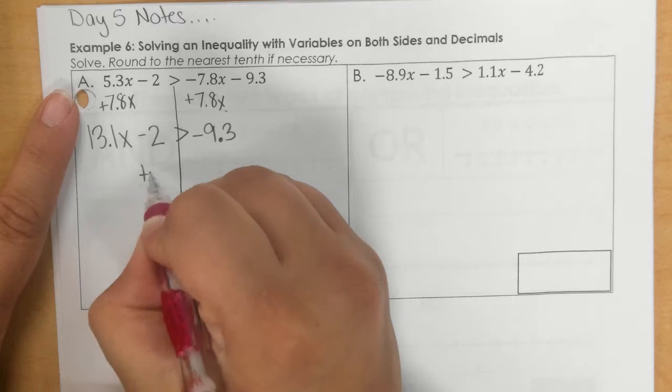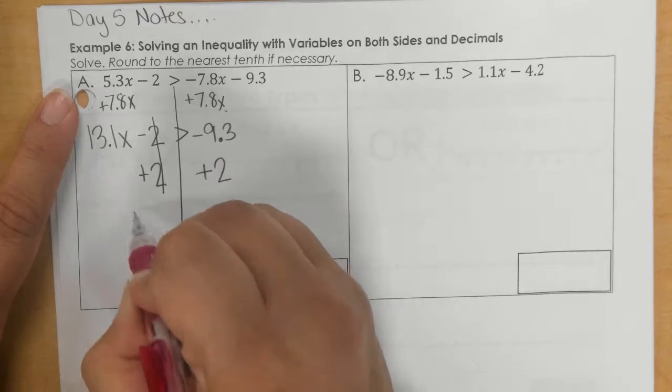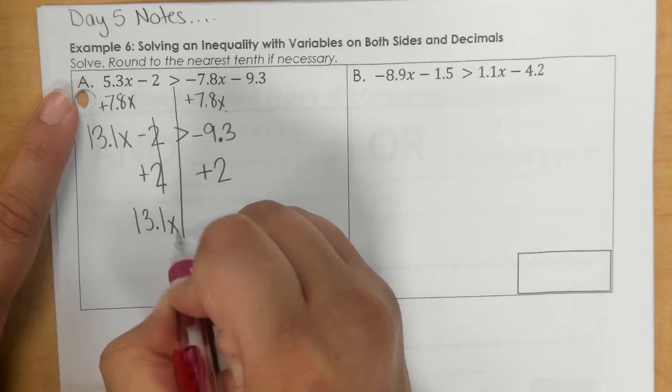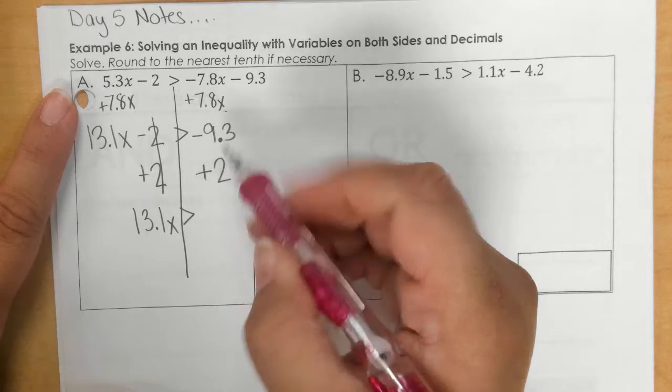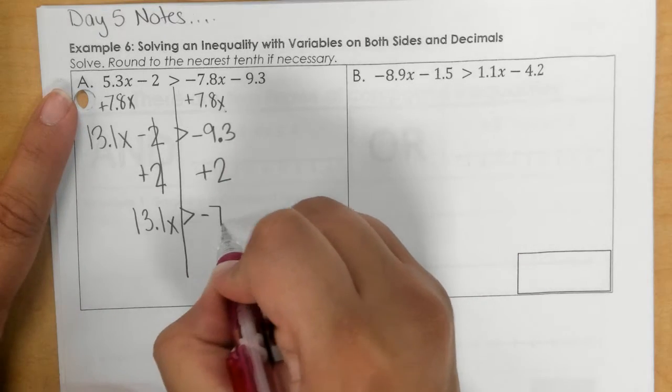So we're going to add the 2. Negative 9.3 plus 2 is negative 7.3.